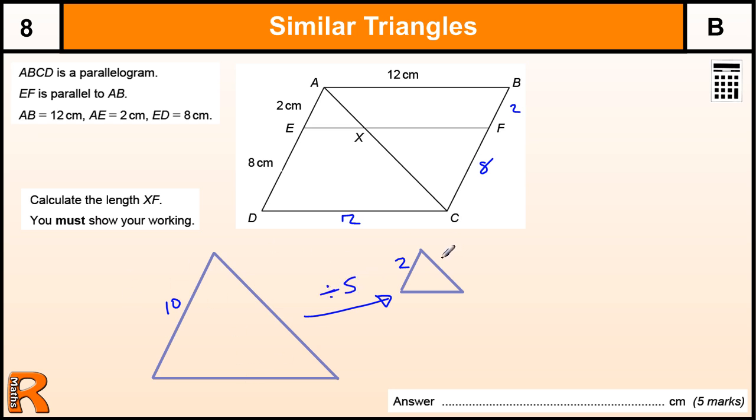We could divide by 10 and times by 2 but it is the same as divide by 5. Now, on the base here we are going from 12 and we want to work out this length because we are trying to find XF. And we know this whole length is the same as the top one which is 12. So, if we can find EX and take it away from 12 we get the answer.